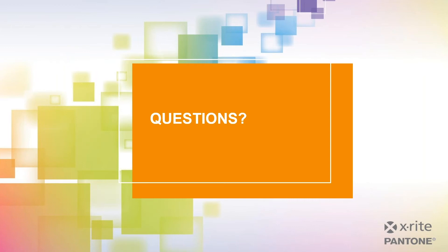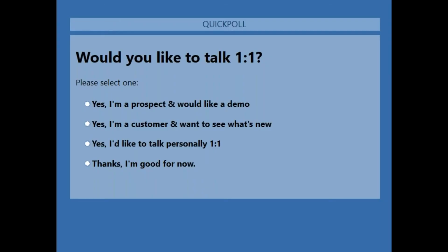Thanks, Darius. One question that came in: can I make a custom profile for an Epson desktop printer? If you're using an Epson desktop printer, I recommend looking at the RGB printer workflow for that. Purchasing the i1 Publish does come with the licensing for the RGB printer workflow. That said, most Epson desktop printers, as well as Canon desktop printers, use an RGB-based workflow. Even though you're still printing in CMYK, the ink is going through the printer and being processed with RGB colors.